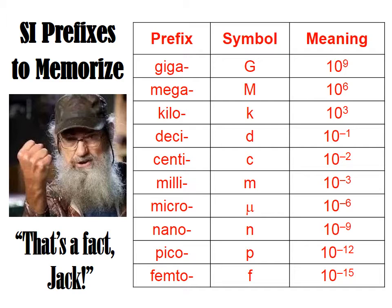These are the SI prefixes, symbols, and meanings that I ask my students to know. Many of these you should be familiar with. Kilo, right here, about a third of the way down, means 1,000. A kilometer is equivalent to 1,000 meters. A decimeter is 1 tenth of a meter; a centimeter is 1 one-hundredth — that's what this 10 to the negative second refers to.